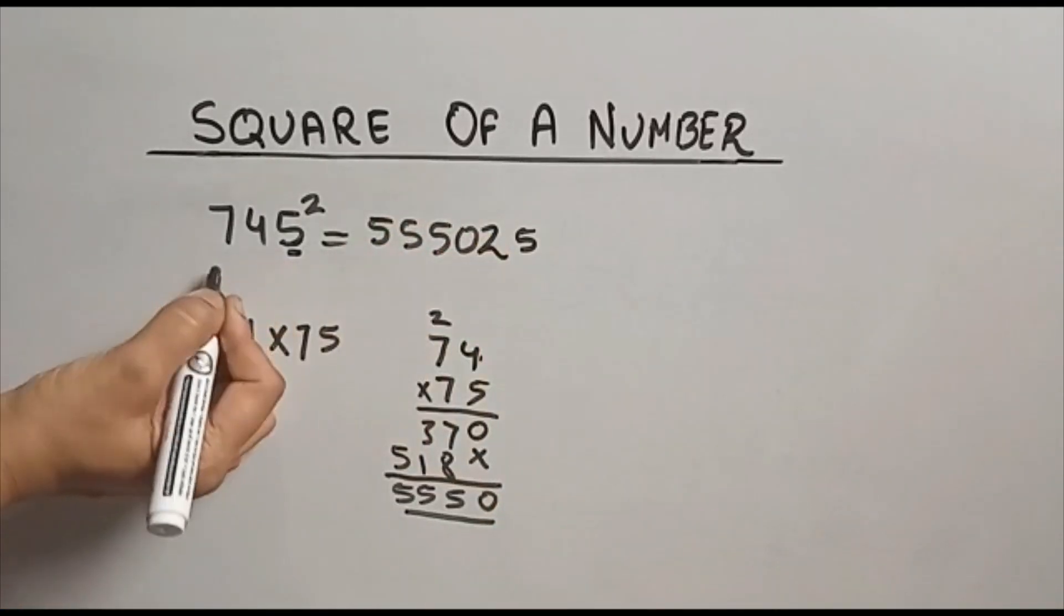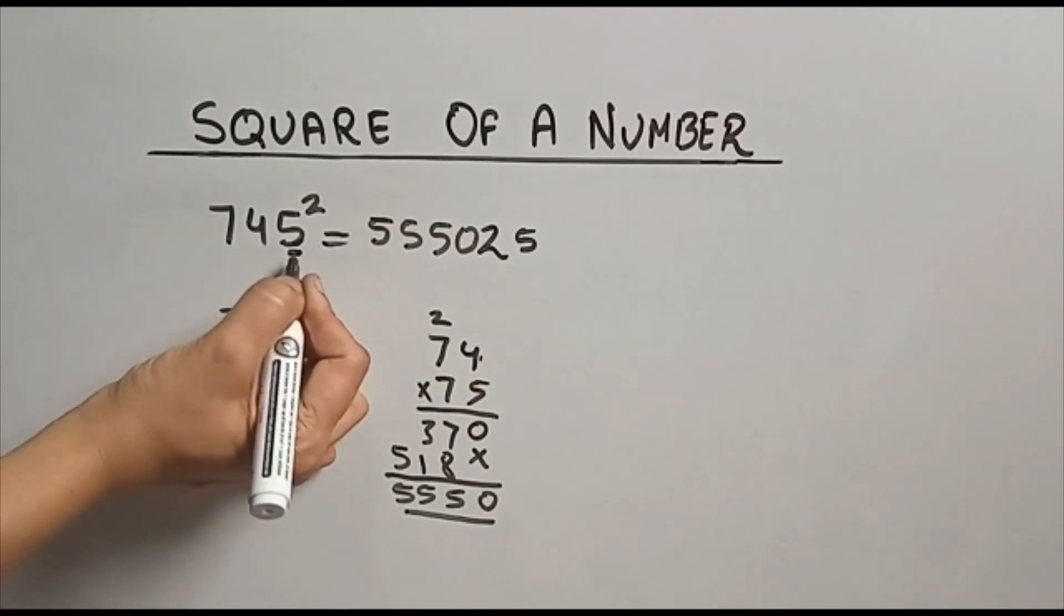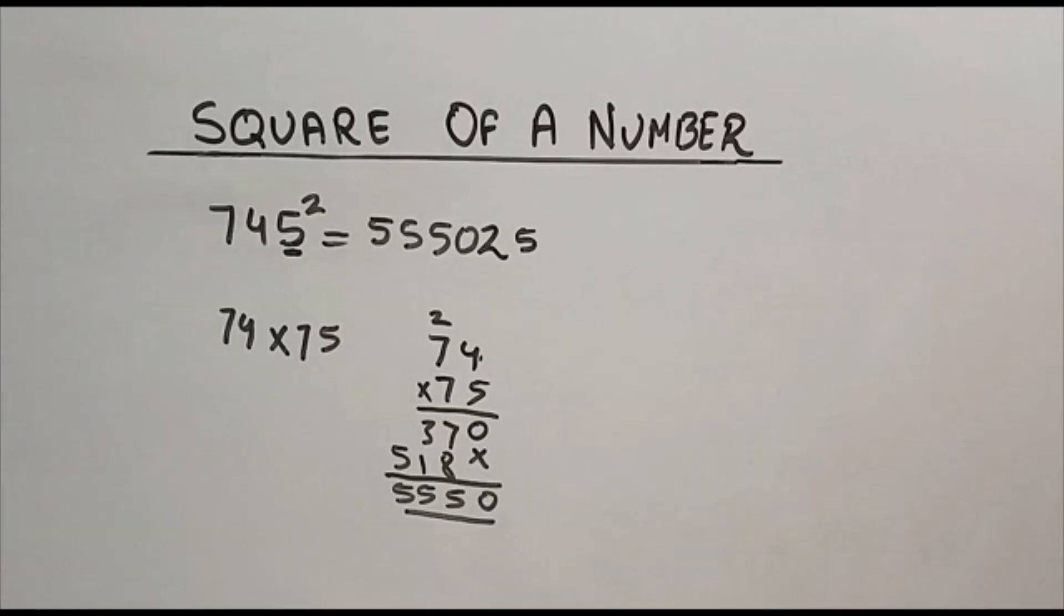This is the square of 745. And this method we use whenever we have 5 at the unit place.